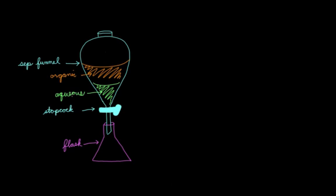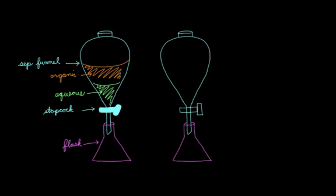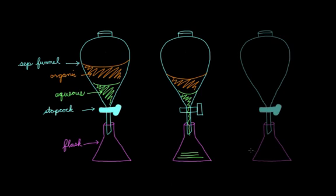Well, first of all, you need to open the stopcock. And when you do that, you'll see that although you still have your organic phase up here, the aqueous phase is now able to flow down the sep funnel and into the flask. And once you've collected all of your aqueous layer in the flask, you can close the stopcock again, which will leave you with just the organic phase in the sep funnel.